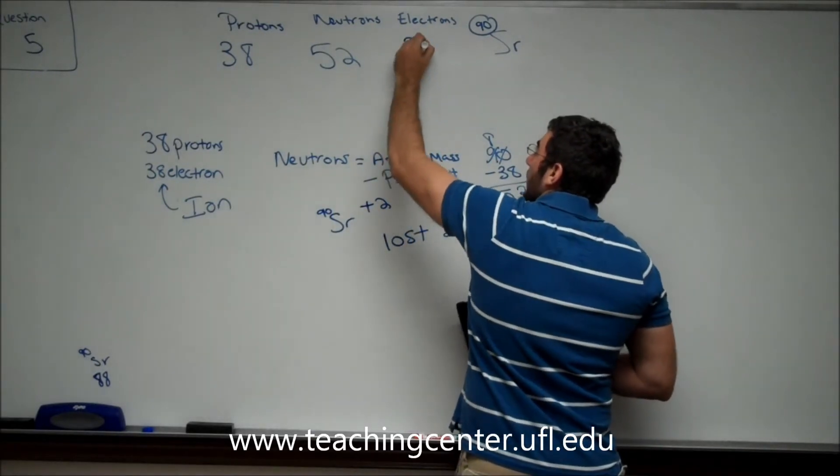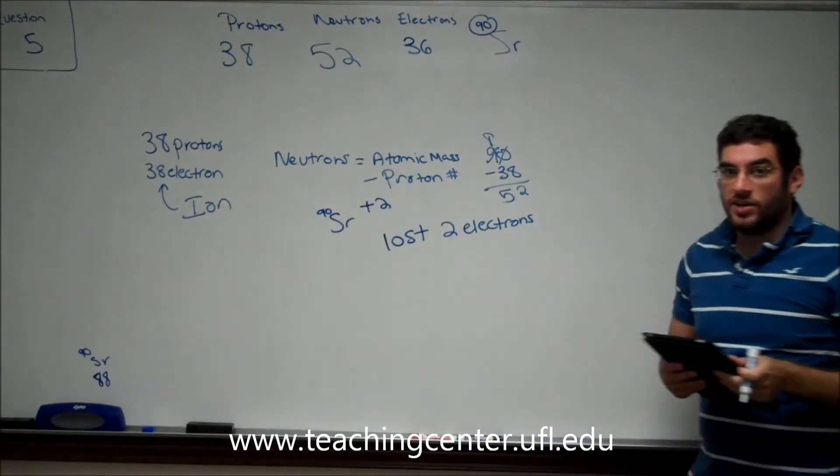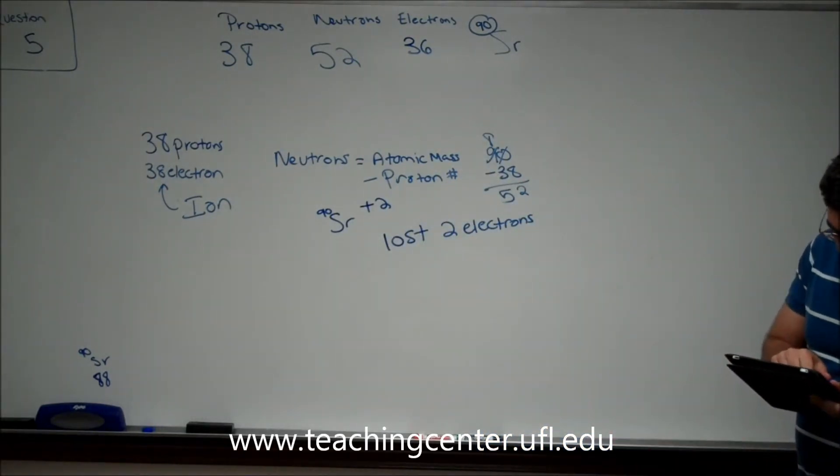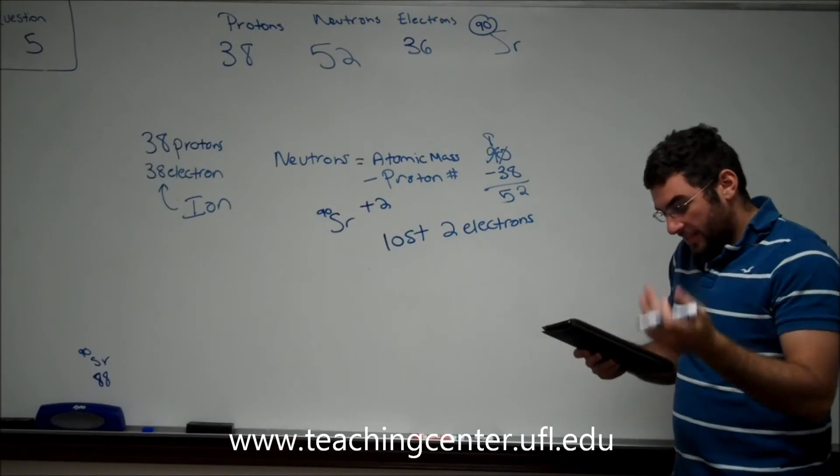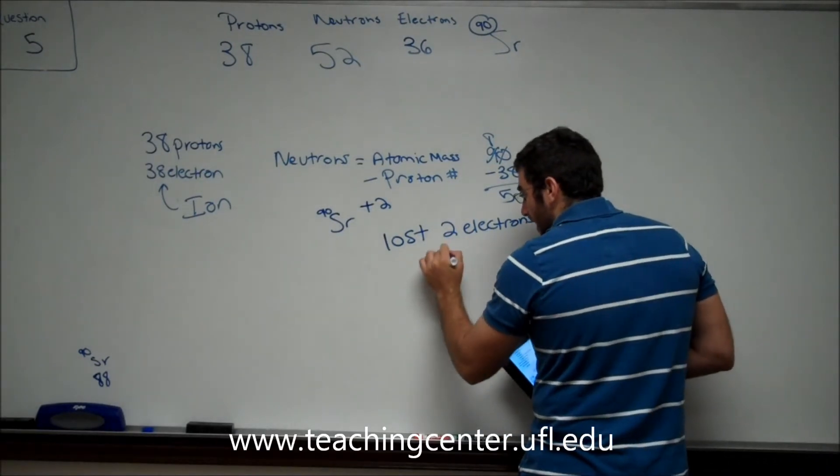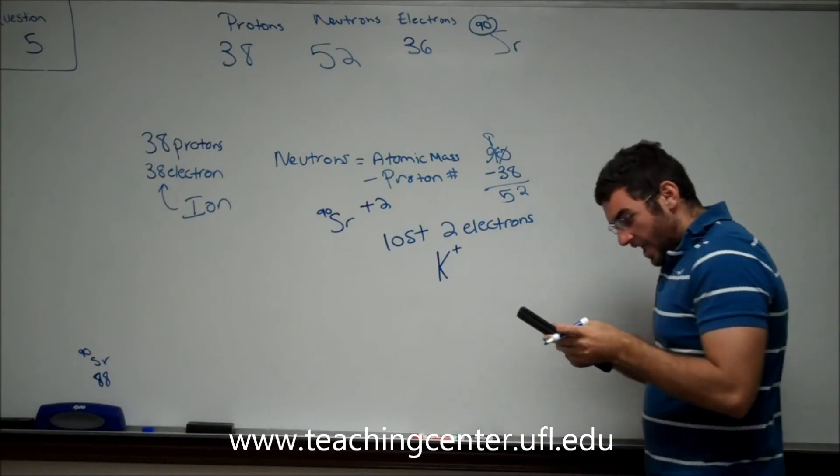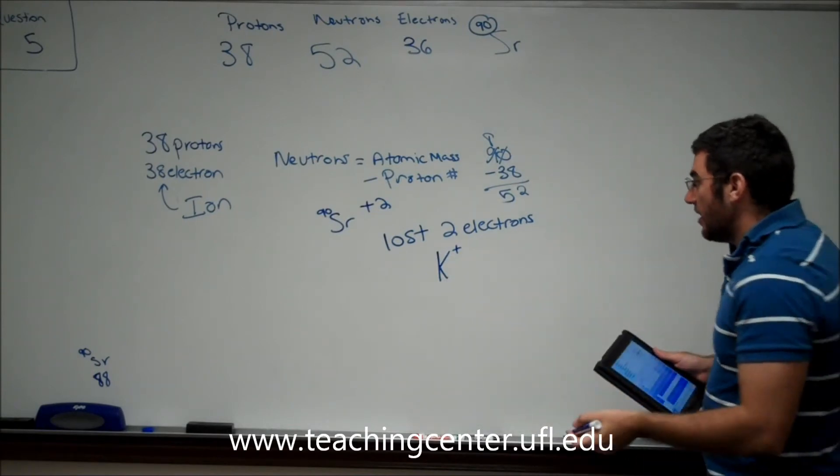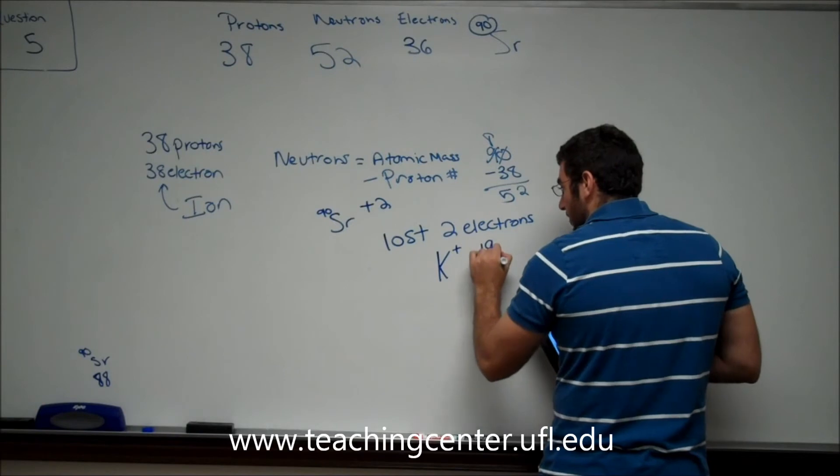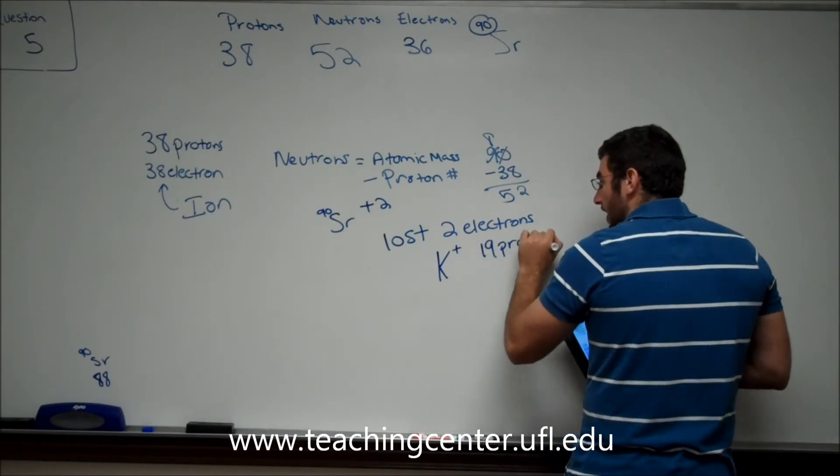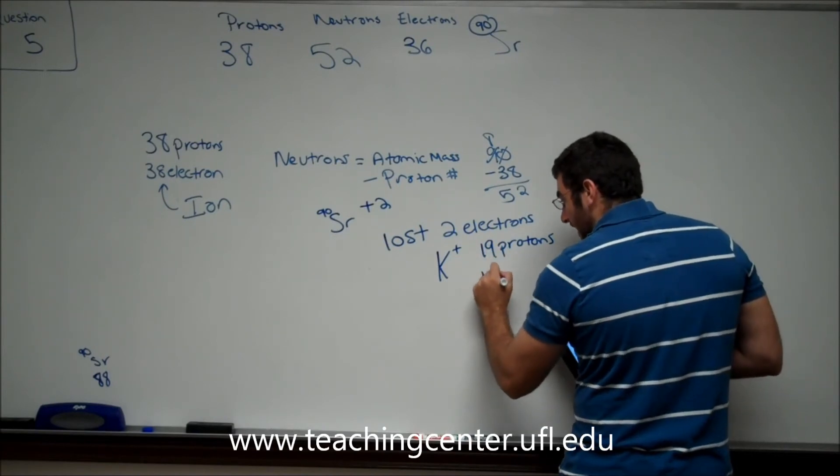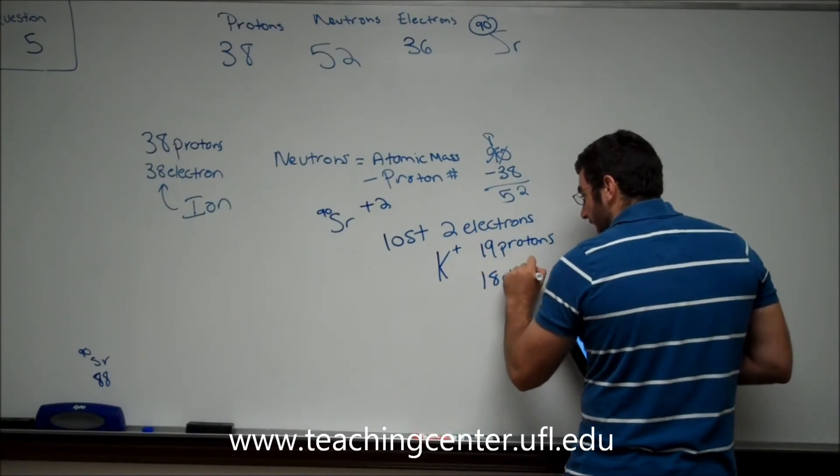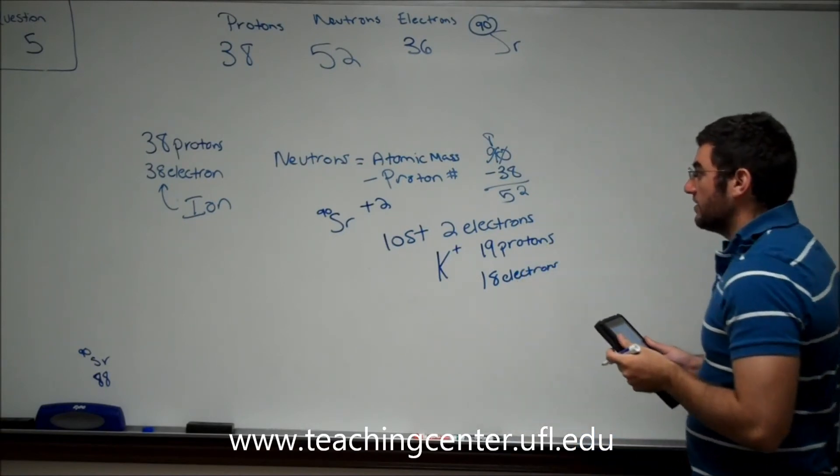Just for the record, if we wanted to do another one, say maybe they asked you about the potassium ion, which was K plus, we knew that potassium has a number of 19, so it has 19 protons. But we know that it has one positive charge, which means it lost one electron, so potassium would have 18 electrons.